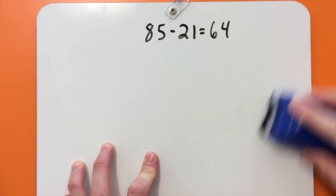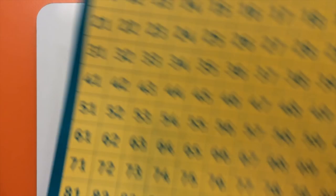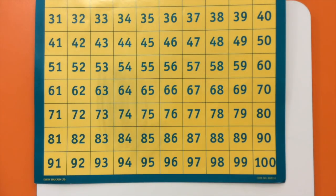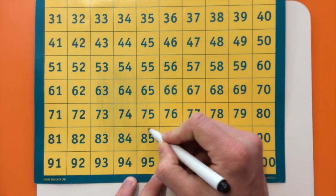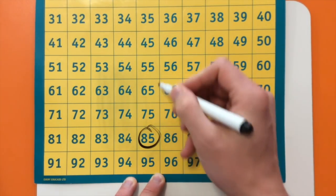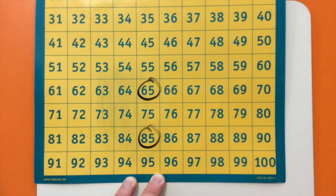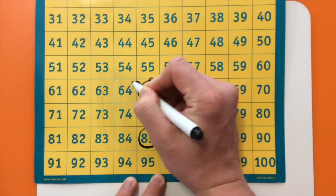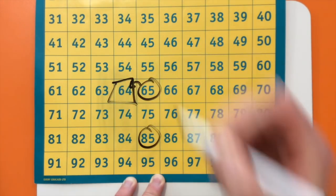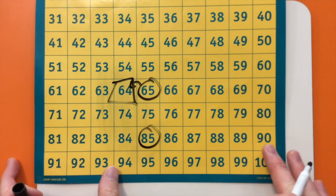Another way of doing that problem would be to use a hundreds chart. I can simply start at 85 and take away my two tens to get me to 65 and then take away one more. So I also have 64.